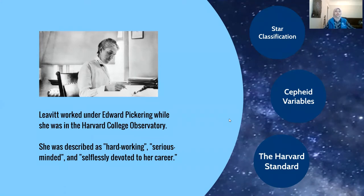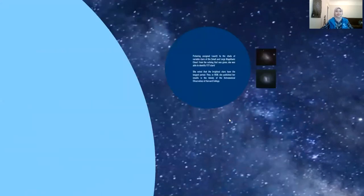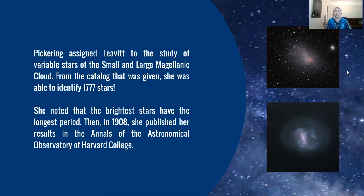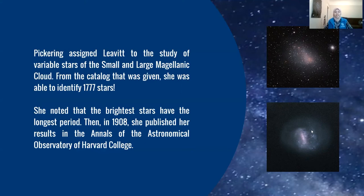While there, she worked on several projects. The first was star classification. Pickering assigned Leavitt to the study of variable stars of the Small and Large Magellanic Clouds, which are dwarf galaxies that orbit our own galaxy, the Milky Way. From the catalog she was given, she was able to identify 1,777 stars. She noted that the brightest stars have the longest period, and in 1908 she published her results in the Annals of the Astronomical Observatory of Harvard College.